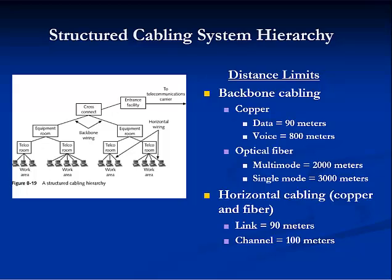This slide shows how a telecommunications network's subsystems and topology are organized. Note the star topology and hierarchical organization, starting with the entrance facility, equipment room, and telecommunications room, all connected together with backbone cabling and cross-connects, with work areas connected through horizontal cabling. Note the distance limits mandated by the standards: in the backbone, copper cable for data is limited to 90 meters, while voice is limited to 800 meters. For optical fiber in the backbone, multimode has a limit of 2,000 meters and single-mode 3,000 meters. Horizontal cabling, whether copper or optical fiber, has a 90-meter link limit and a 100-meter channel limit.